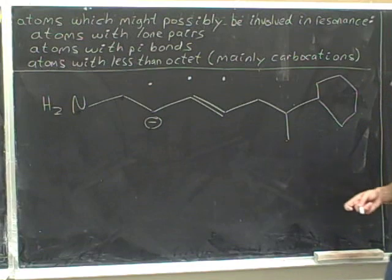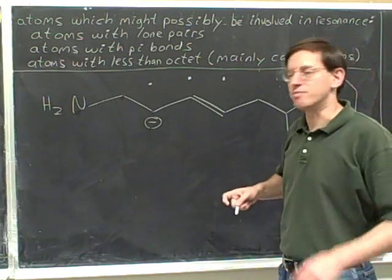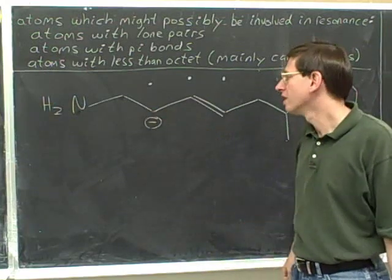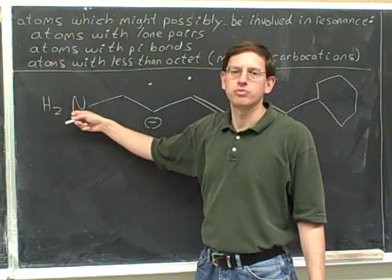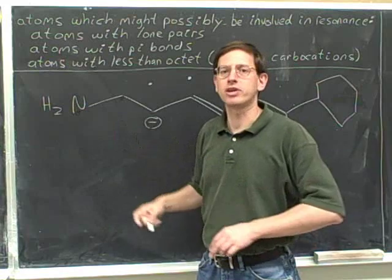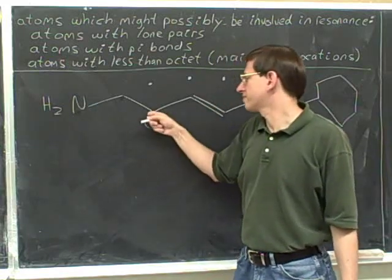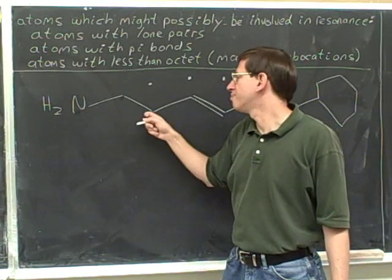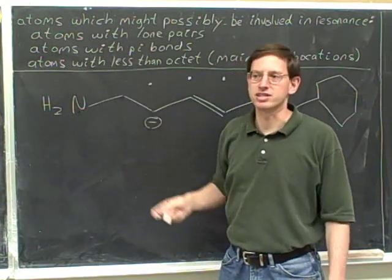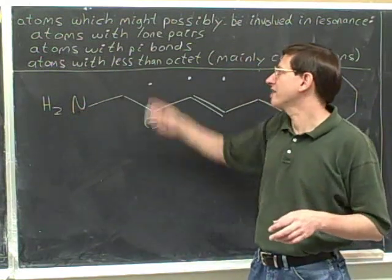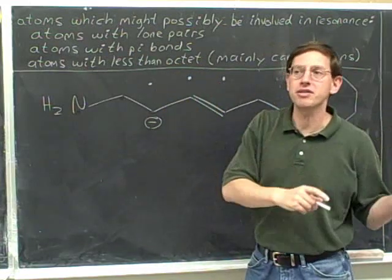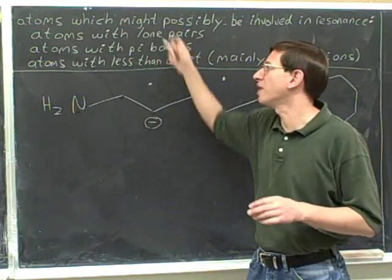So there are only three atoms here that should have been selected as potentially participating in resonance: the negatively charged carbon, and the two pi bond carbons. Note clearly why the nitrogen can't participate in resonance — even though it has a lone pair, it's not bonded to anybody who can participate in resonance. The nitrogen is bonded to a normal carbon that cannot participate in resonance. In order to participate in resonance, you need one of the three characteristics and must be directly bonded to another atom that also has one of these characteristics.